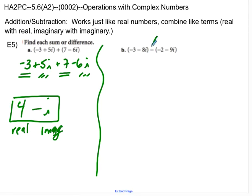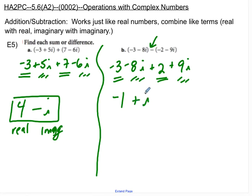For the second one, now I have to pay attention to this subtraction. So I'm going to have negative 3 minus 8i as my first set of parentheses, but now I have to distribute this negative and get plus 2 and plus 9i. You would have done the same thing if these had been x's instead of i's. Negative 3 plus 2 is negative 1. That's my real component. Negative 8i plus 9i is a single i. That's my imaginary component, and that's it.